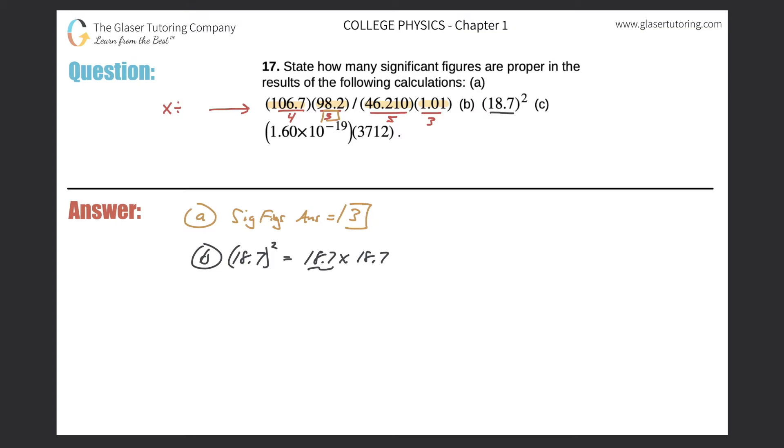Well, how many significant figures does the first number have? Three. How many does the second? Three. It's a multiplication problem, and therefore my answer should match the number with the least. So it should have three. Easy enough.